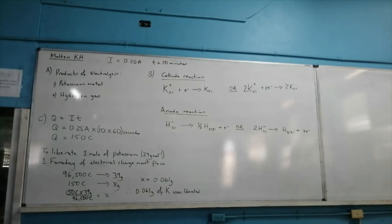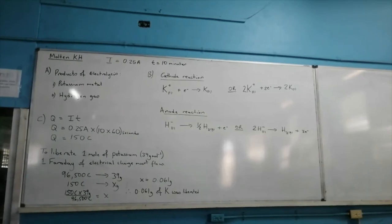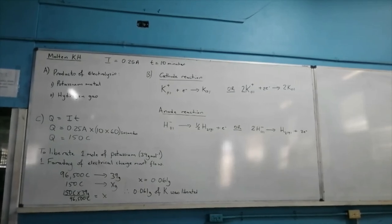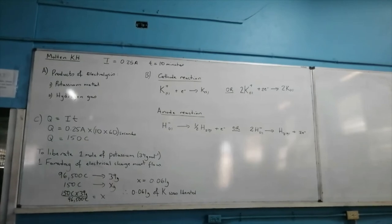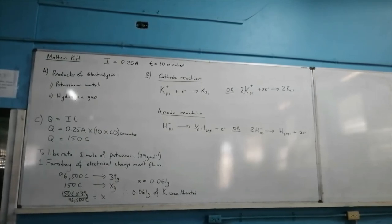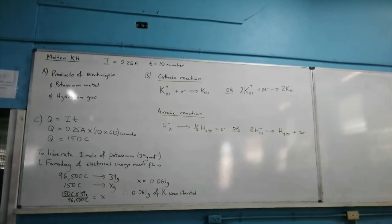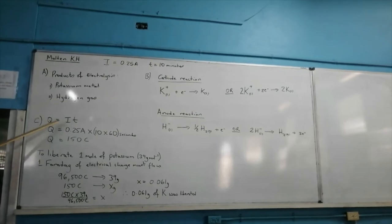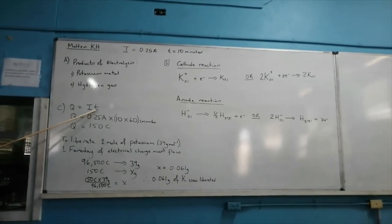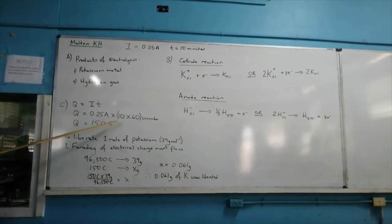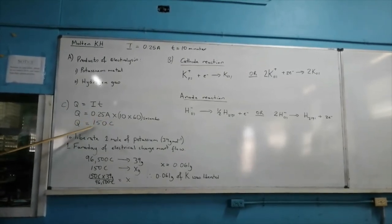Since 2 moles of electrons are liberated at the anode, 2 moles of electrons must be received at the cathode — so 2K⁺ accepts 2 moles of electrons to form 2 moles of potassium metal. Using Q = IT with T in seconds: 0.25 amperes × 10 × 60 gives 150 coulombs.